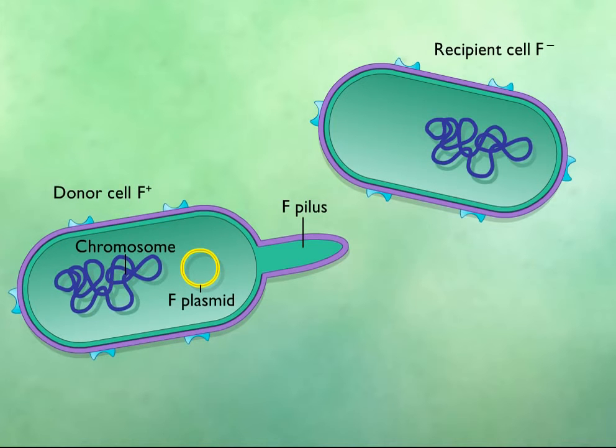The F plasmid encodes for the F pilus, a protein appendage that attaches the donor to the recipient cell.